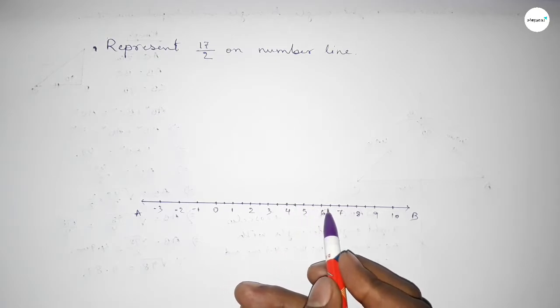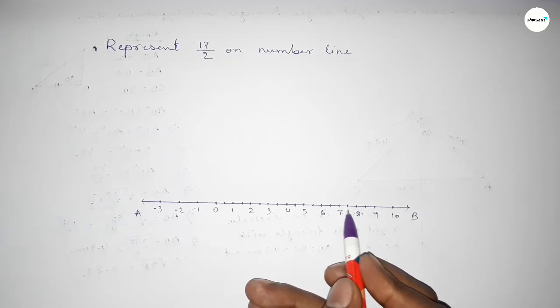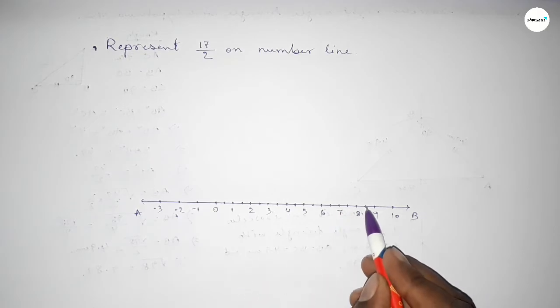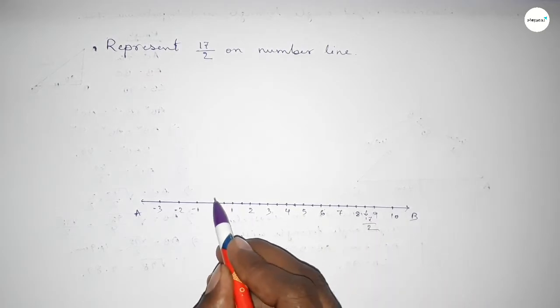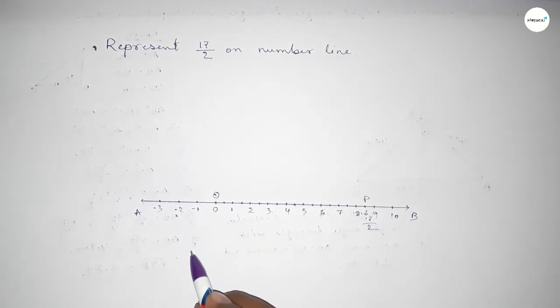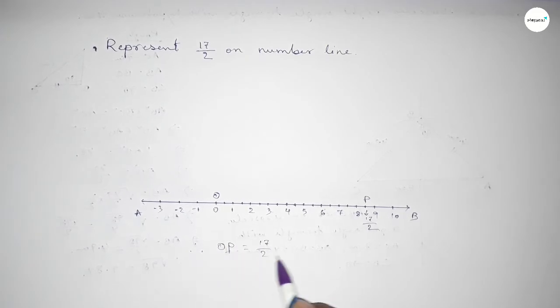10/2, 11/2, 12/2, 13/2, 14/2, 15/2, 16/2, and this is 17/2. So this is 17/2 on the number line. Therefore, OP is 17/2 units.